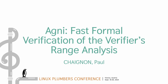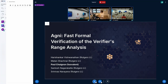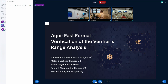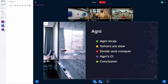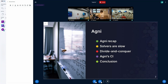Hi everyone. Today I'm going to talk about Agni, a tool for formal verification of the Linux eBPF verifier. Agni was originally implemented by Harry, Mattan, Nivas, and Santosh at Rutgers University, and I've more recently joined to start working on it. If you're French, you might try pronouncing this as 'Annie' — that was my original mistake — but it's actually pronounced 'Agni', named after the god of fire in Sanskrit.